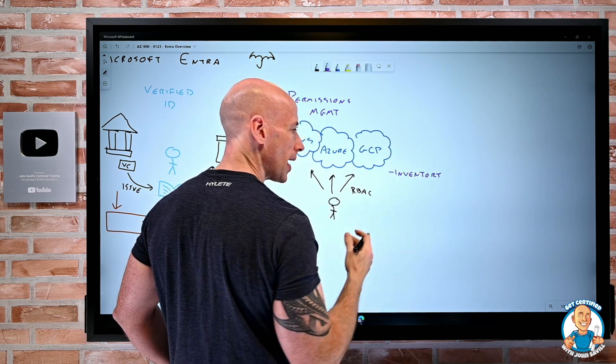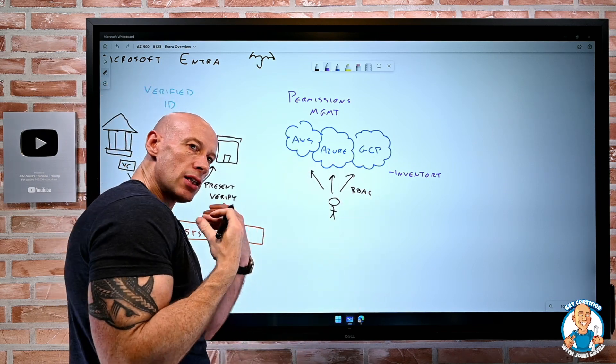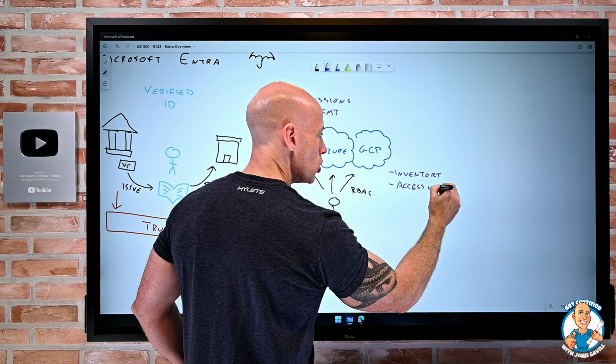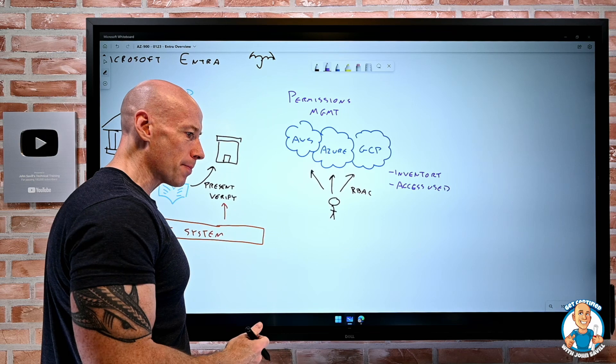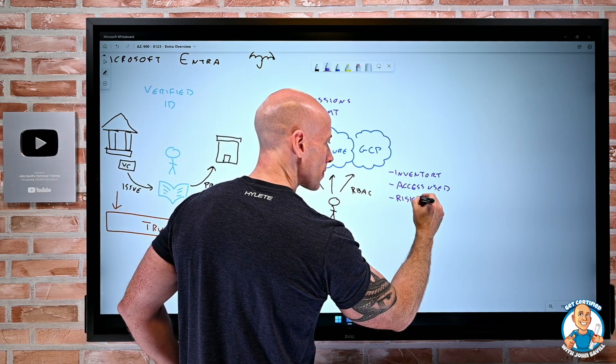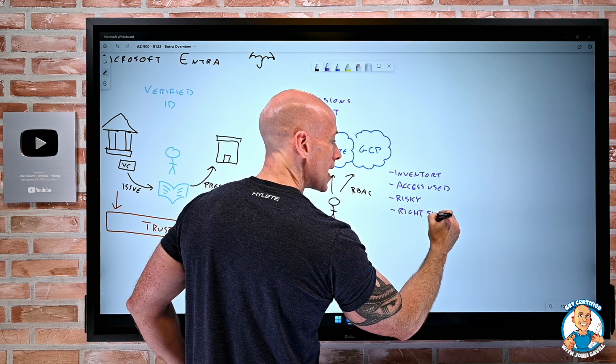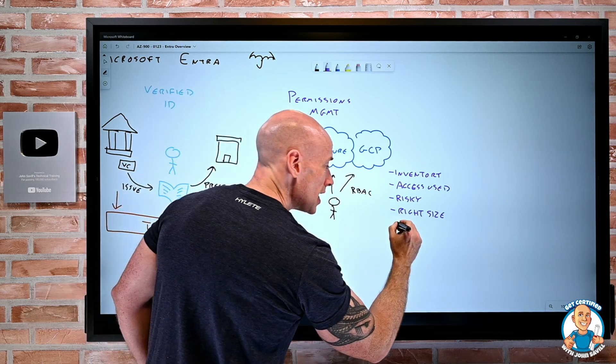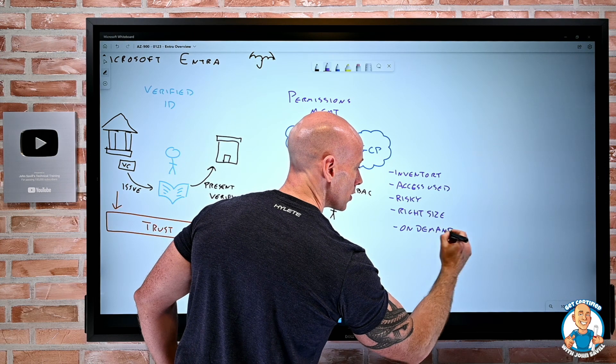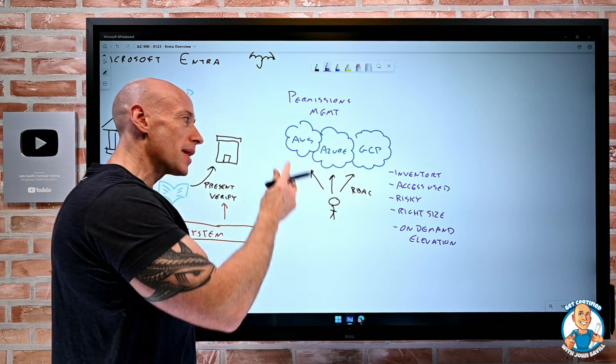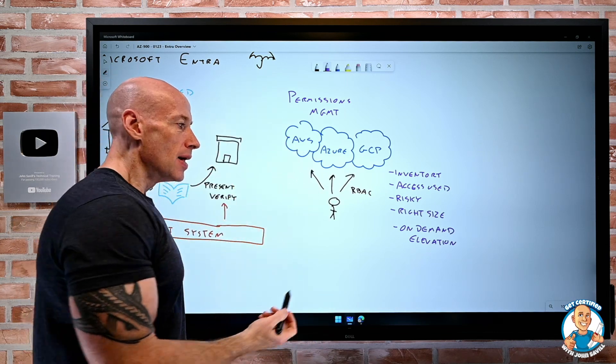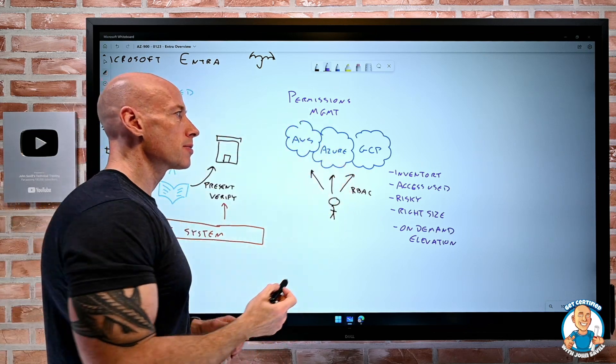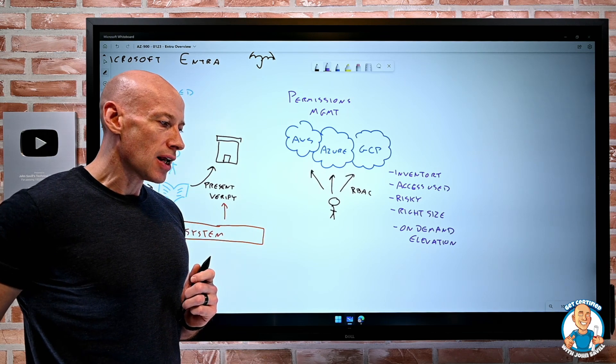So what permissions management does is, first of all, it can help me inventory the permissions across all of these different clouds that users or service principals and identity used by an application has. It can work out what are they actually using. So you have all these permissions, but you're using this tiny subset. Which ones might be considered risky? And then it can right-size, so it can create custom roles that give you just enough permission to what you're actually using. And it can even support things like on-demand elevation. Now, we have seen on-demand elevation with things like privileged identity management, but that's only for Azure and Azure Active Directory. And this is more ad hoc. So it's not saying I'm planning and probably want to use—I just need to, for this instant in time, get these extra permissions. So this permissions management allows me to do that over these different clouds as well.